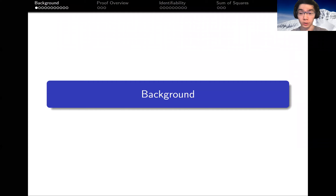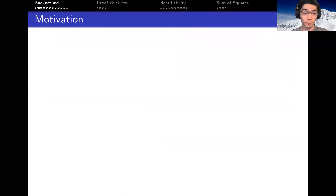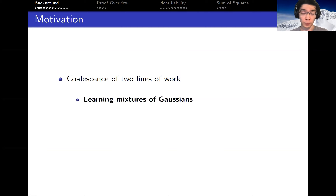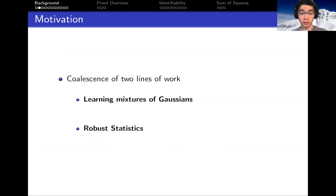I'll start with a little bit of background. This work really represents the coalescence of two long-standing lines of work, which are first, learning mixtures of Gaussians, and second, robust statistics.